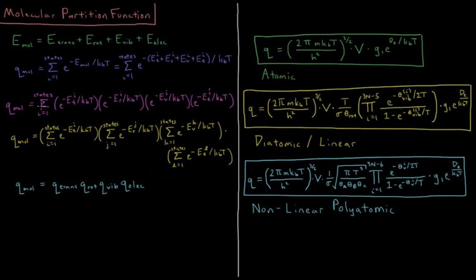We can separate the sum over all states into a sum over translational states, a sum over rotational states, a sum over vibrational states, and a sum over electronic states — each with the Boltzmann factor of those individual contributions. This gives us the definition of the partition function for each individual energy contribution, so the molecular partition function is a product of the translational, rotational, vibrational, and electronic partition functions.